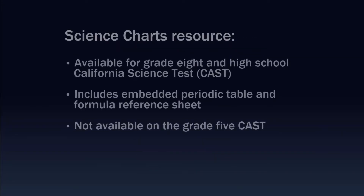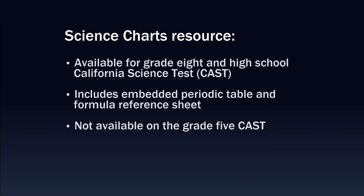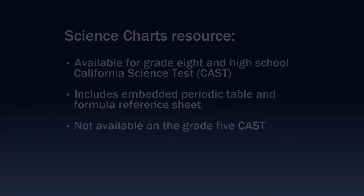On the Grade 8 and High School California Science Test, or CAST, science charts are available for use. This includes an embedded periodic table and a formula reference sheet, which provides formulas that a student may use in responding to a test item. These charts are not available on the Grade 5 CAST.